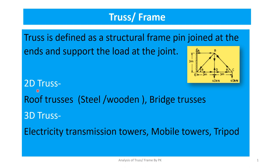There are two kinds of trusses: 2D trusses and three-dimensional trusses. Two-dimensional trusses include roof trusses, normally made of steel or wood, and bridge trusses seen on river-side areas. Three-dimensional trusses include electricity transmission towers, mobile towers, and tripods.